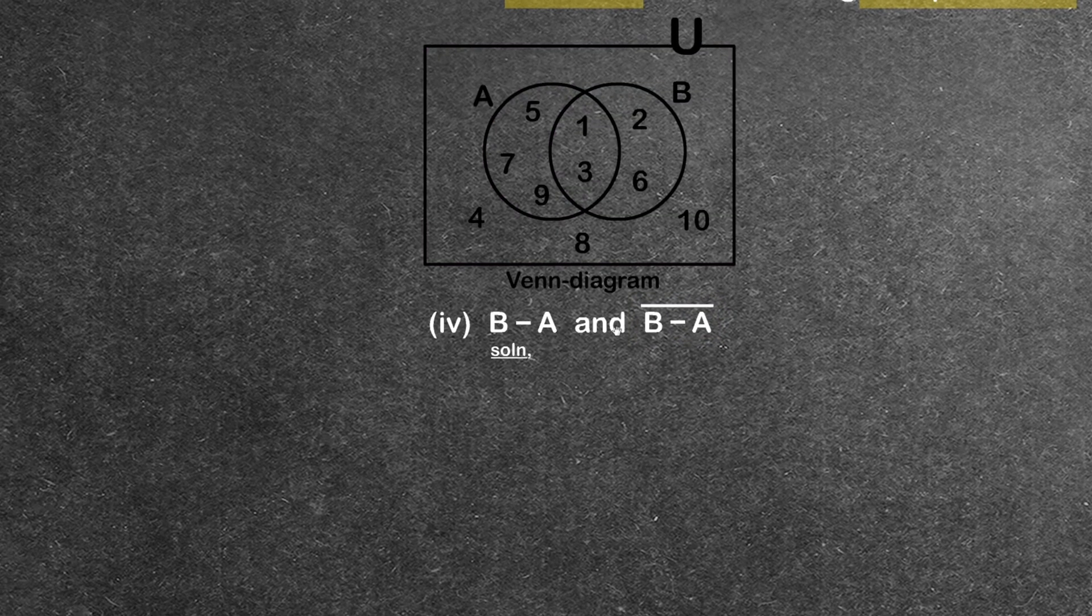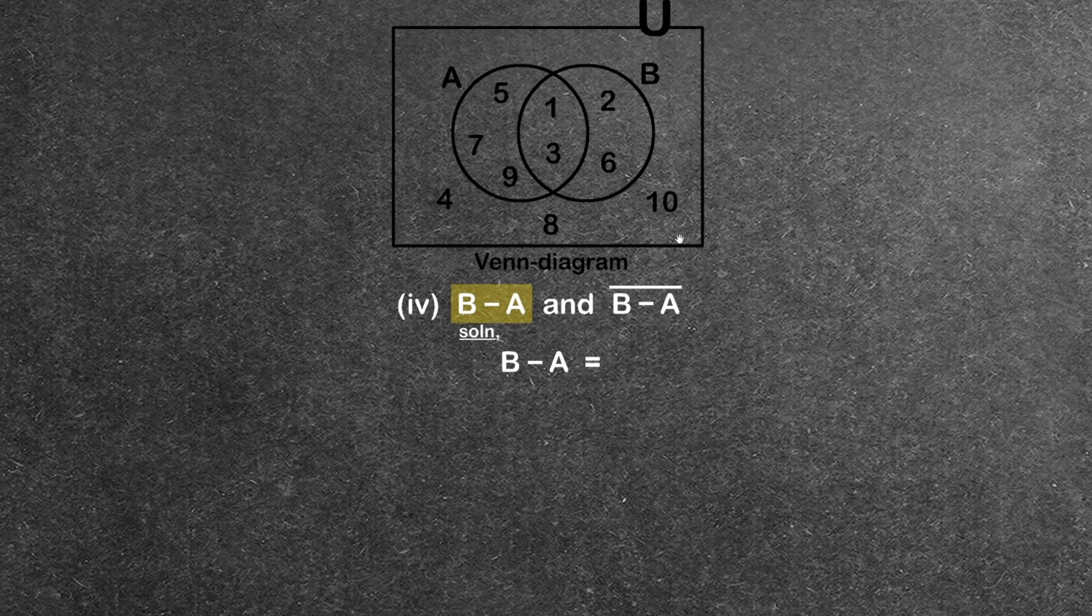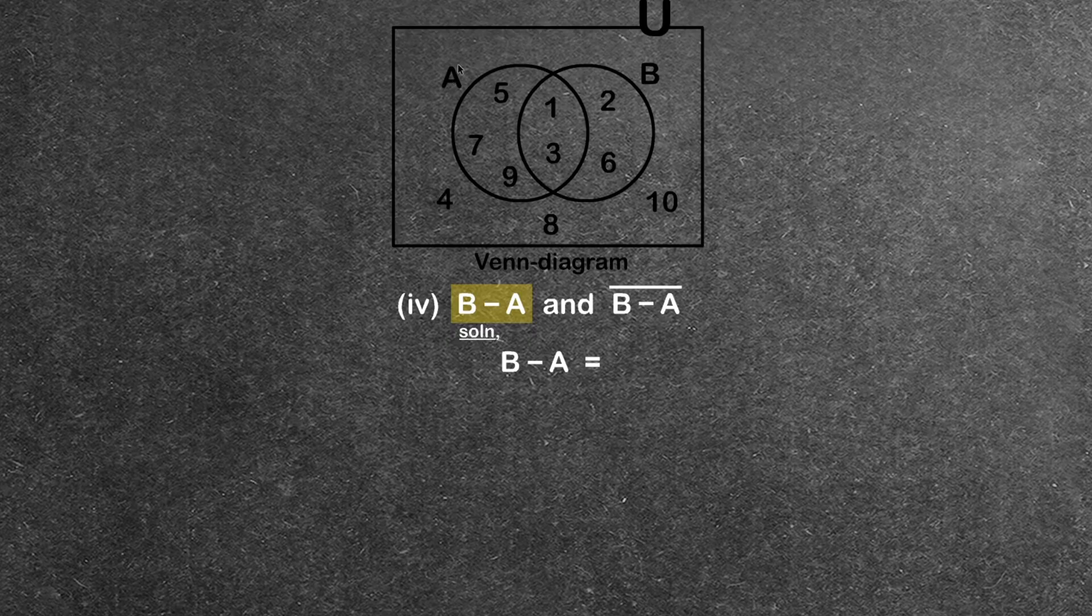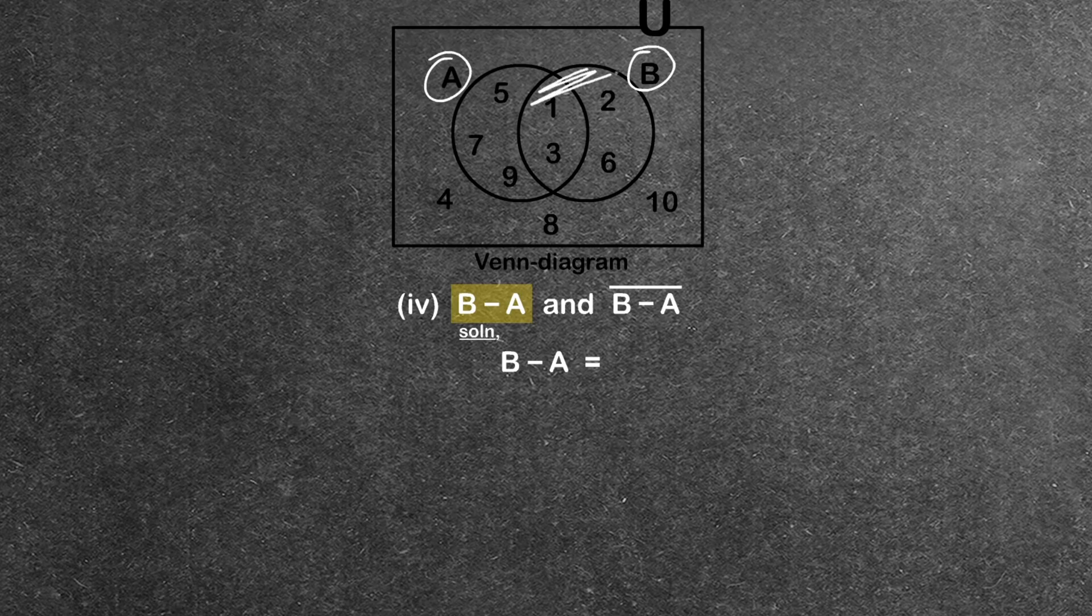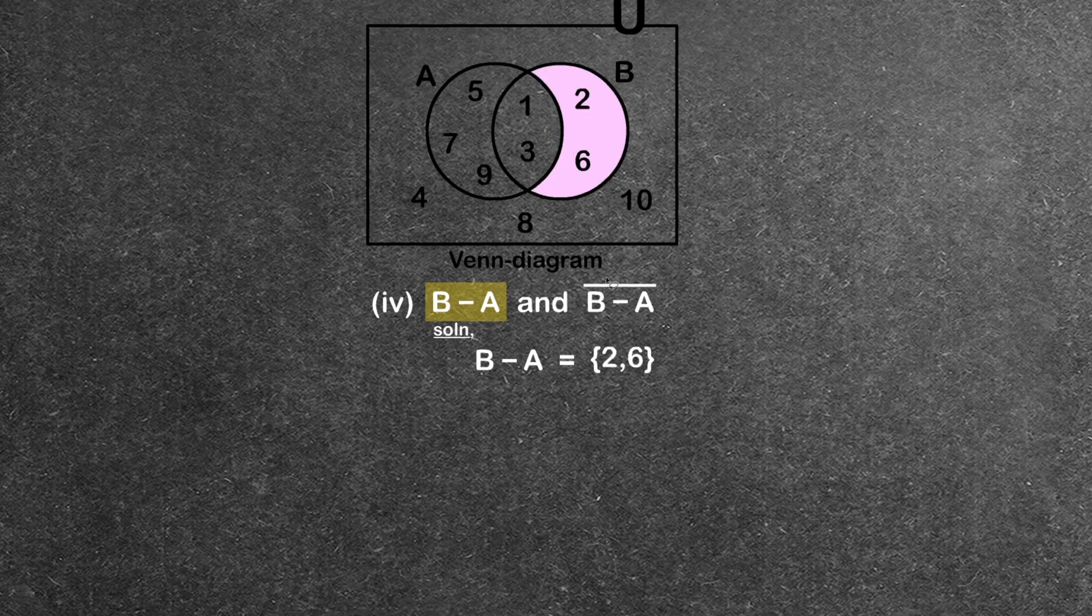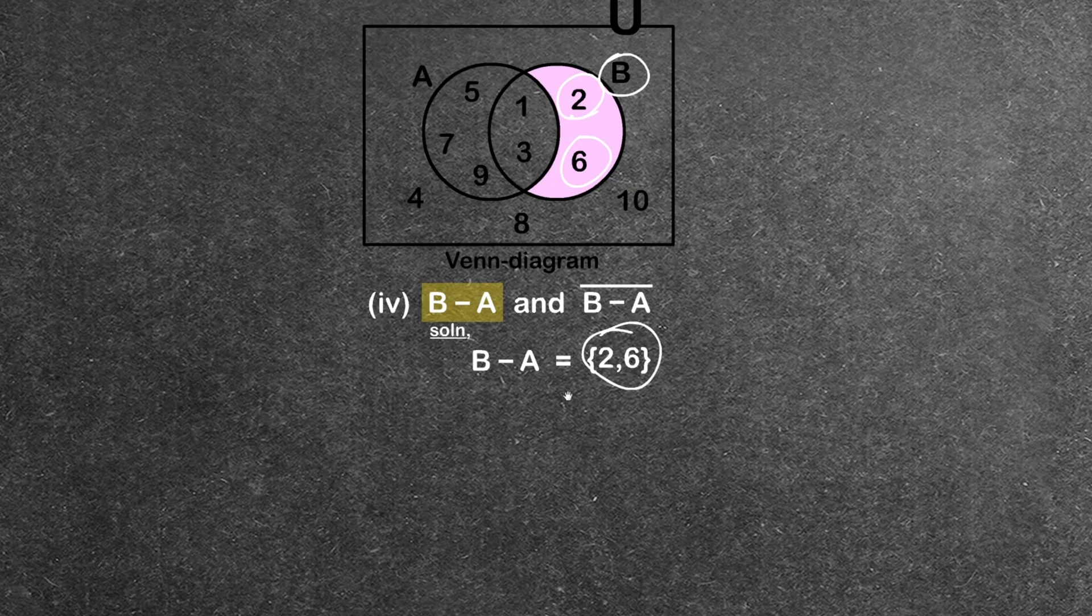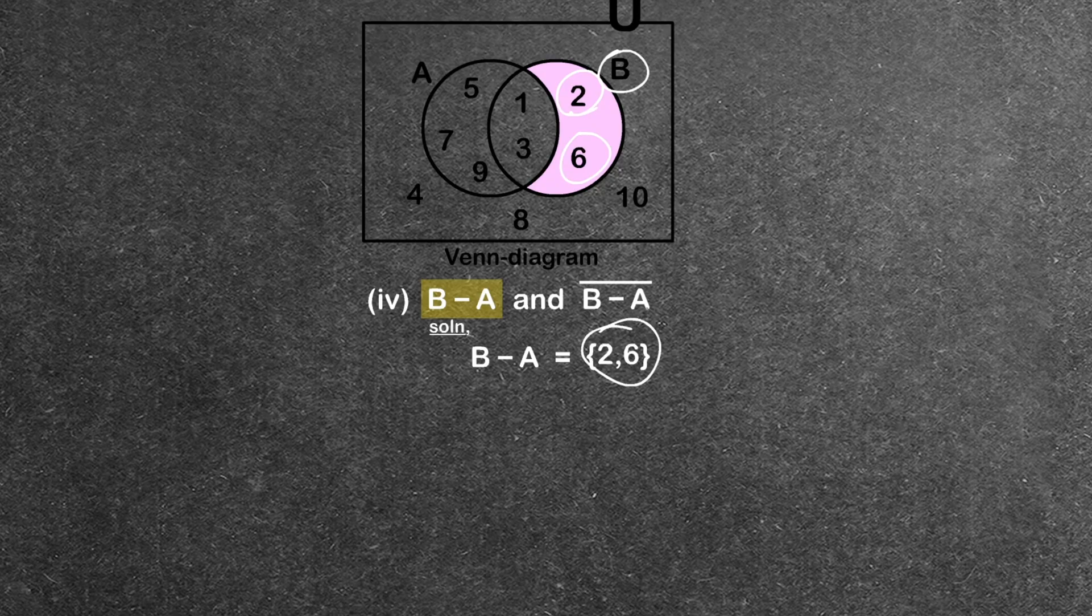Now we have part (iv), B−A (B minus A). B minus A means all of B minus the elements that are in A. From B, we remove the common elements with A. This gives us 2 and 6.